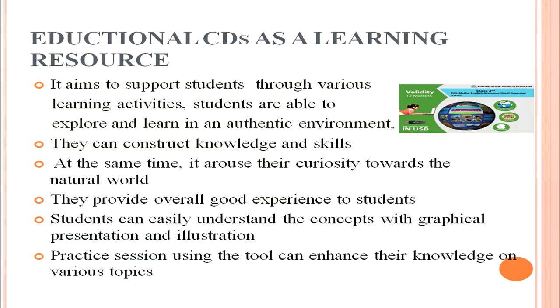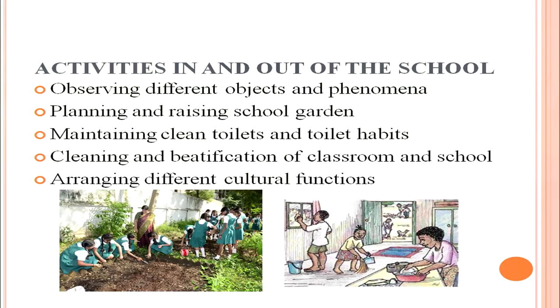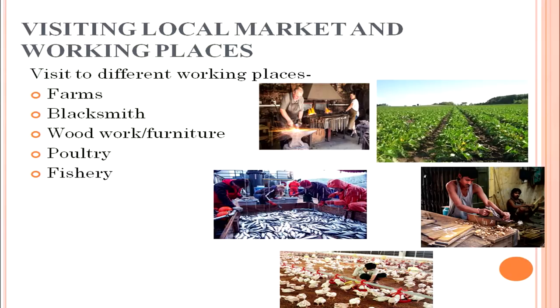Other learning resources include activities in and out of the school. These include observing different objects and phenomena, planning and raising a school garden, maintaining clean toilets and toilet habits, cleaning and beautification of classroom and school, and arranging different cultural functions. Students can also visit local markets and working places such as farms, blacksmith, woodwork, poultry, and fishery, where they experience real-life working environments.